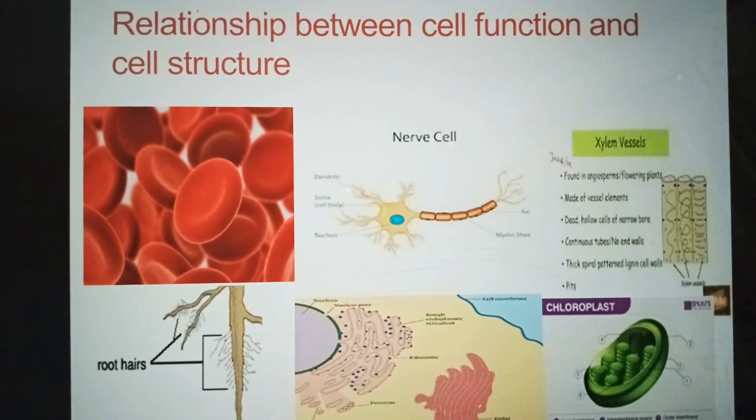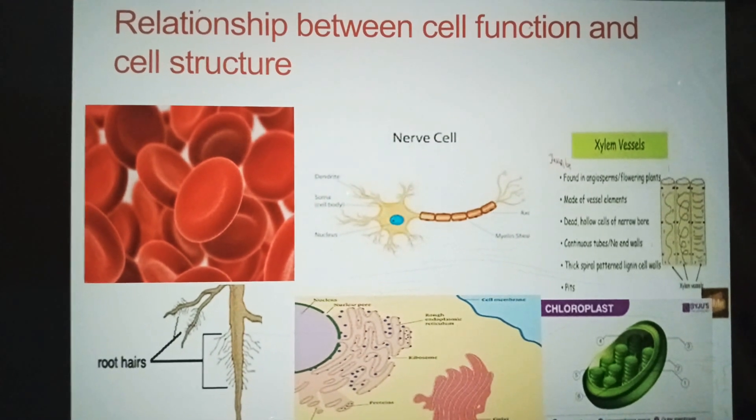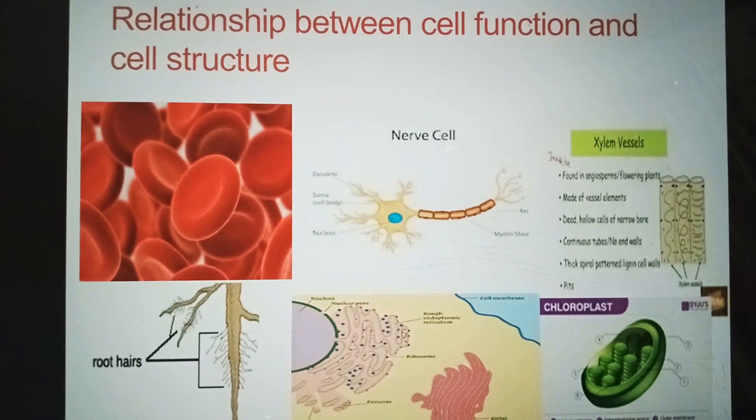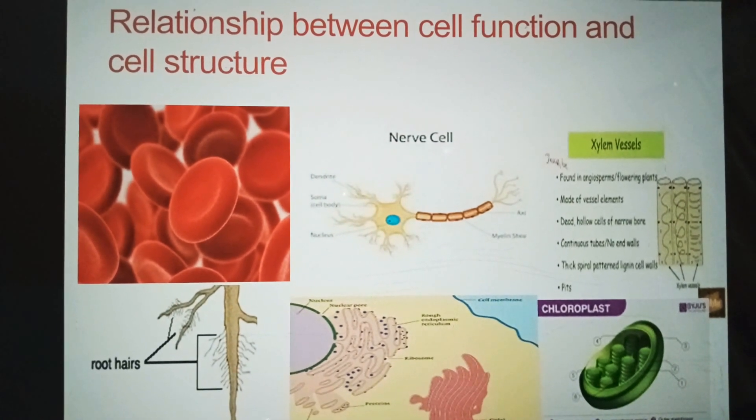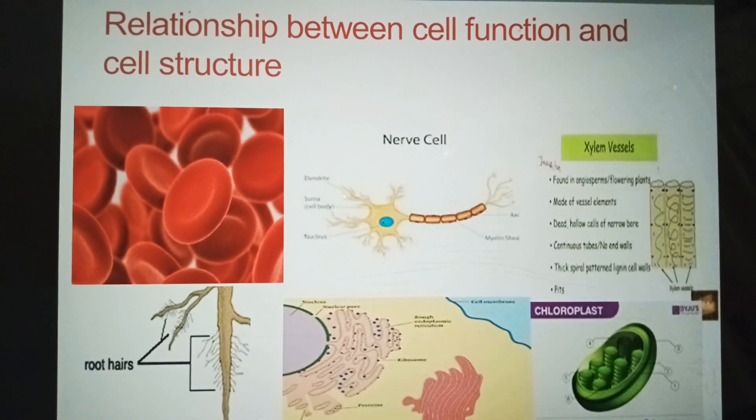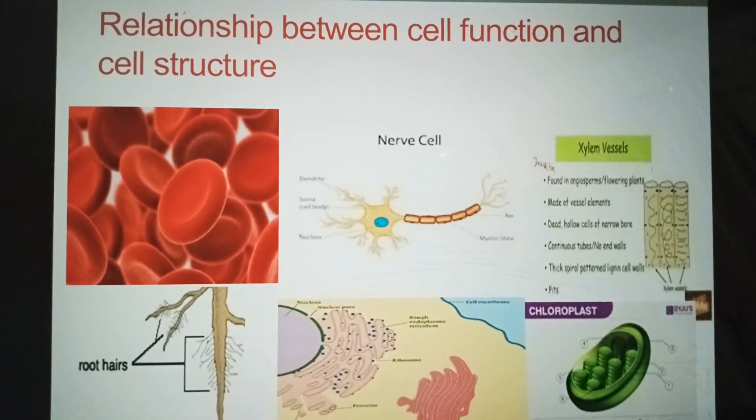Now I will describe relationship between cell function and cell structure. The bodies of animals and plants are made of different cell types. Each type performs specific functions, and all coordinated functions become the life processes of organisms.